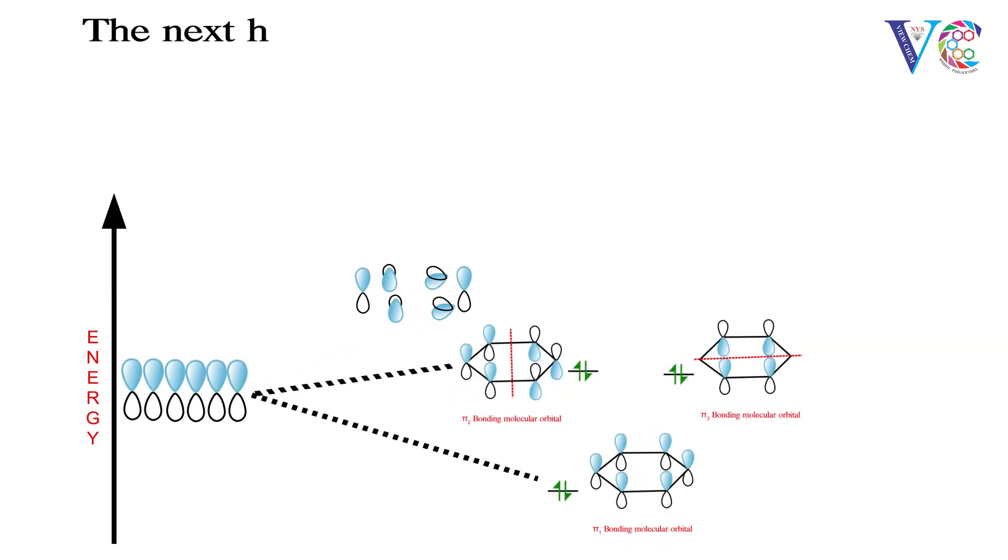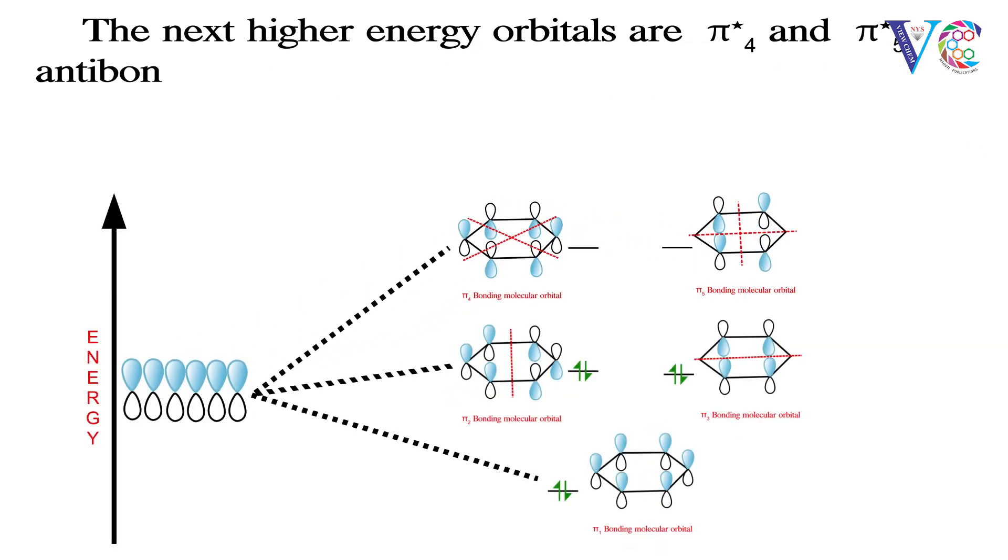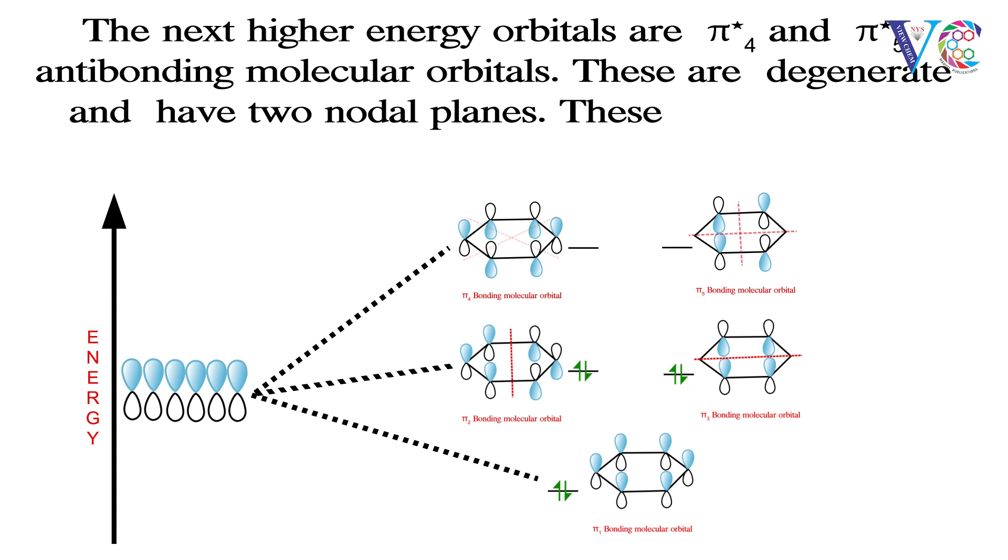The next higher energy orbitals are pi star 4 and pi star 5 anti-bonding molecular orbitals. These are degenerate orbitals and have two nodal planes. These are the lowest unoccupied molecular orbitals.